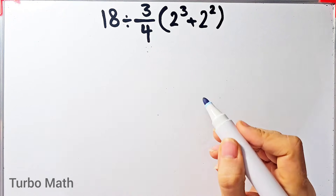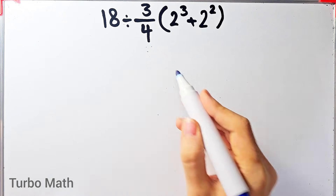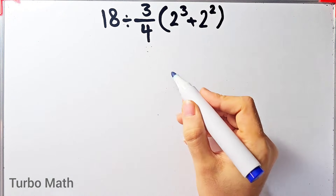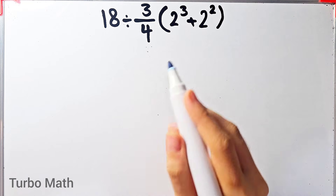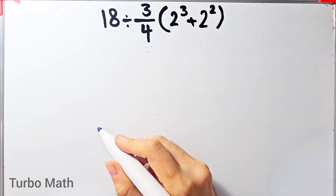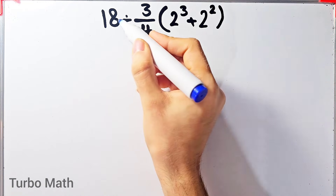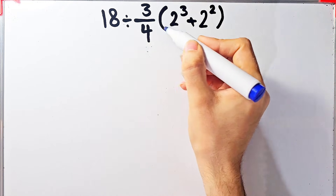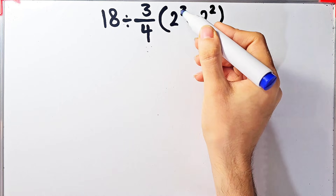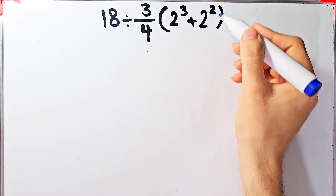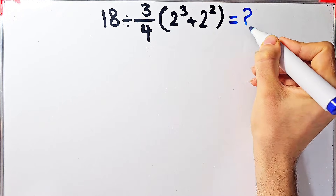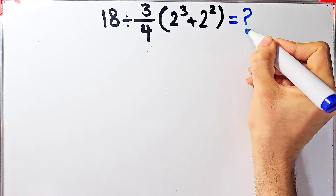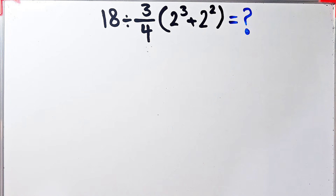Hi friends, welcome to Turbo Math channel. A lot of people get confused when they see this question — they don't know which operation to do first, so they often make a mistake. The problem is: 18 divided by 3/4, then times open parenthesis 2 to the power of 3 plus 2 to the power of 2 close parenthesis. What is the answer?